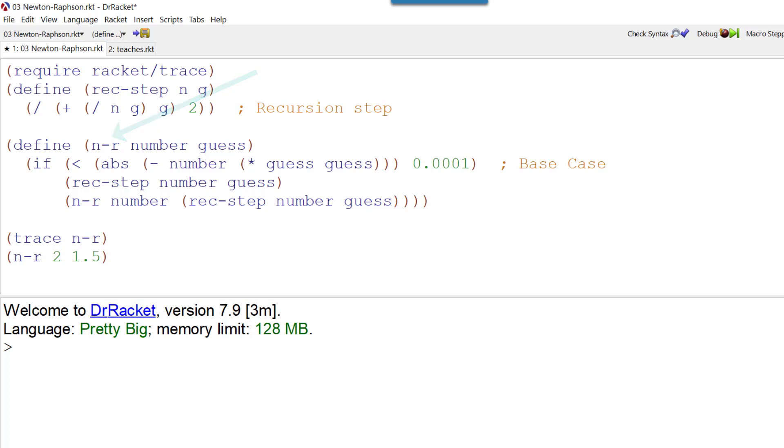And what we're saying is that if the error in our guess is smaller than 0.001, well then we're happy. If it isn't less than 0.001 then we're going to do the recursion bit again. We're going to call the Newton-Raphson method again. We're going to keep doing that with the rec-step until we get an answer. And to show you this working we're going to put trace on.